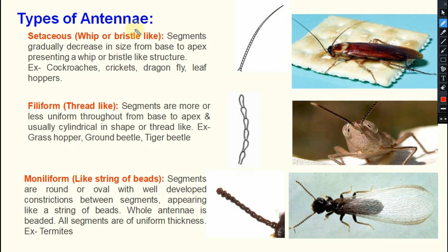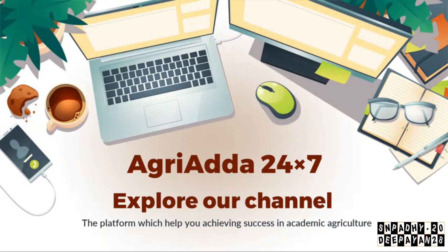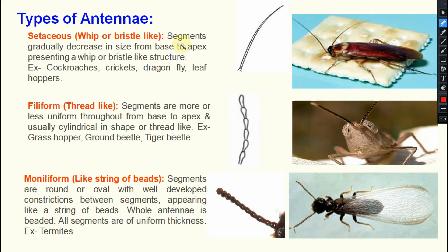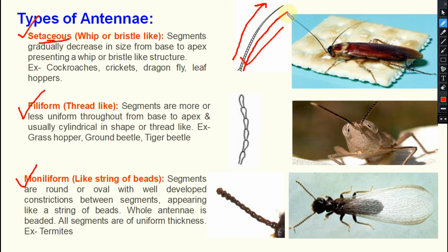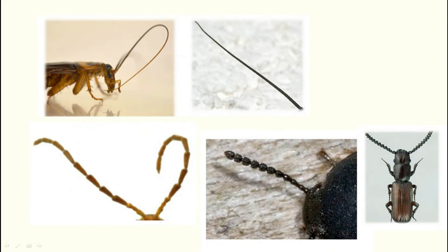Now coming to the types of antenna. Different types of antenna are there. The first one is setaceous — these are basically whip-like or bristle-like. Here, the segments gradually decrease in size from base to apex, presenting a whip or bristle-like structure. It is present in cockroaches, crickets, dragonfly, and leafhopper. Here you can see that is the setaceous antenna — gradually their size is decreasing.